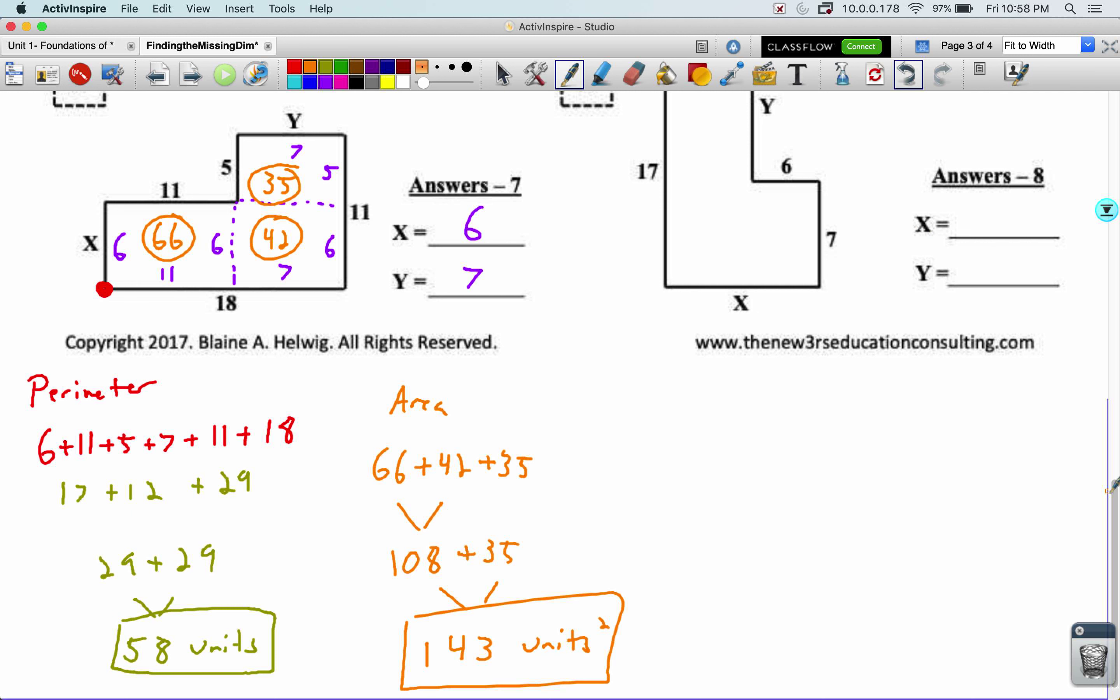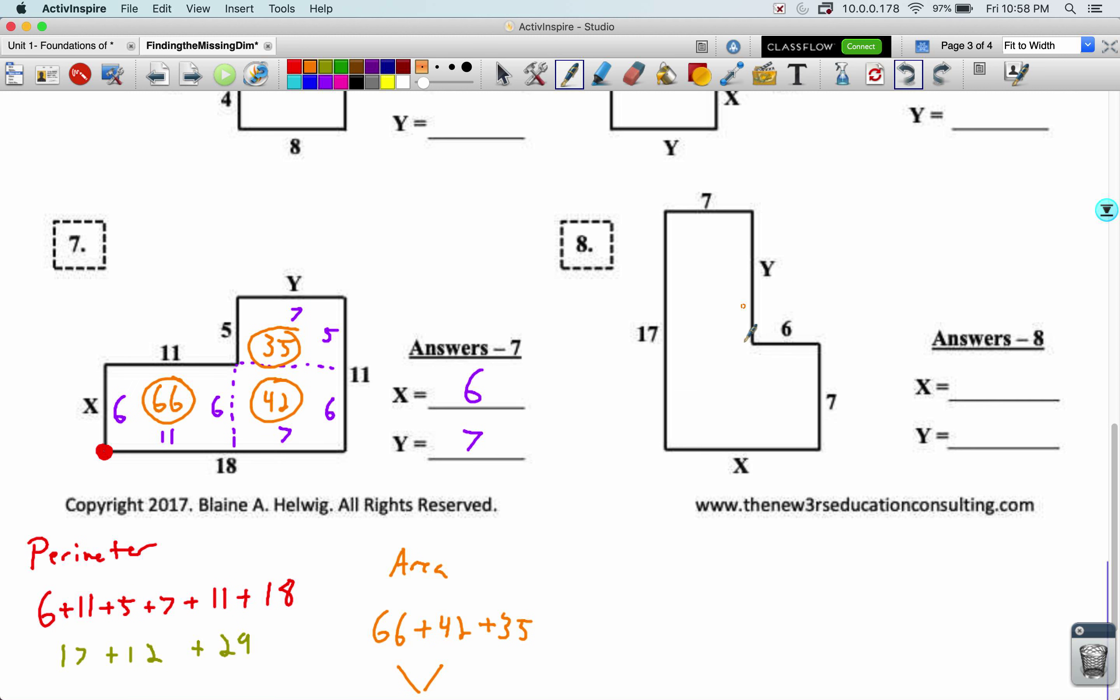One more of these. Let's do problem number 8. I'm going to add in my dotted lines. Let's see. Carry down the 7 and the 6. Together they make a 13 for X. And if I carry over the 7, this has to be a 10, meaning that Y also has to be a 10.